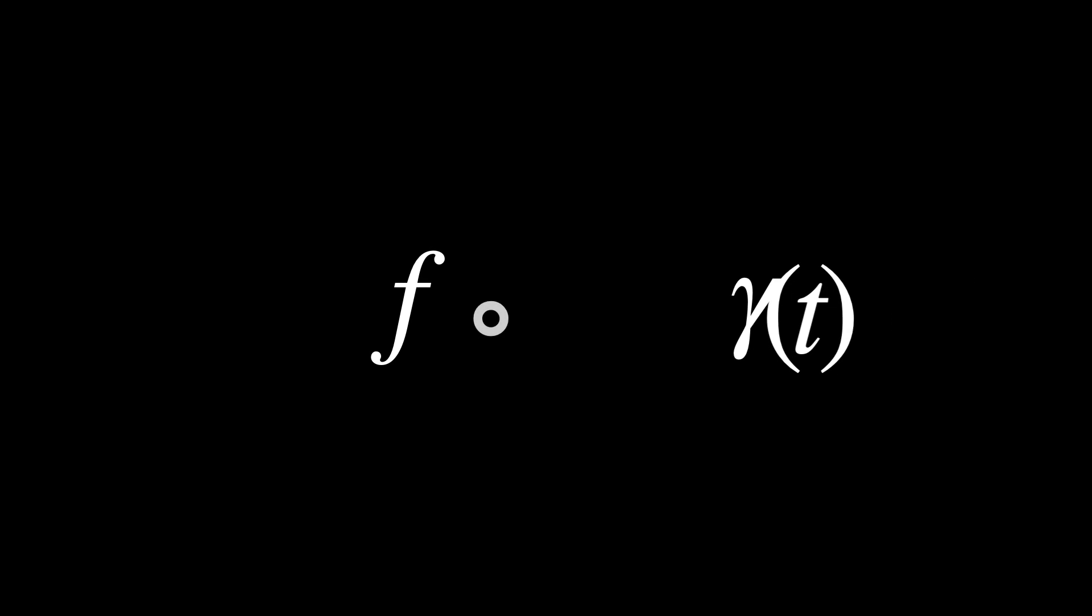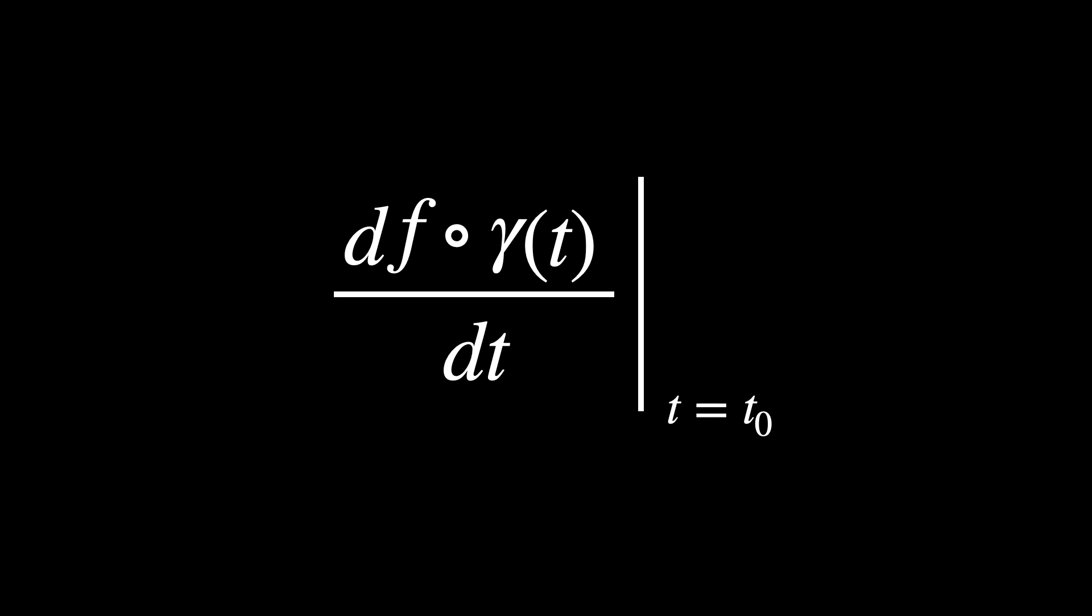Now, say we want to find the rate of change of our function F as we walk along our curve gamma of T. We want to look at a new definition of velocity relative to this test function at our point P on the manifold.